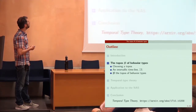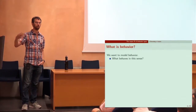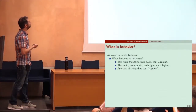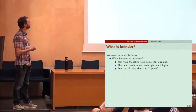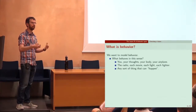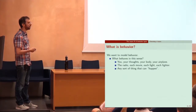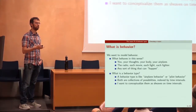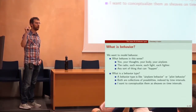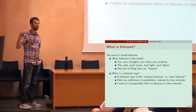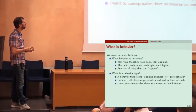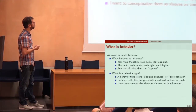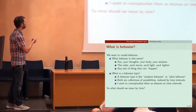The topos B of behavior types — we want to model behavior. A behavior type is like airplane behavior or pilot behavior; it's the set of things that an airplane can do, which is different than the set of things that the real numbers can do. A real number can just be five forever, or maybe a real number can change in time like our distance to the sun. A pilot is a different sort of thing. These behaviors are collections of possibilities — you should think sheaves indexed by time intervals.